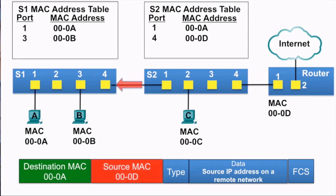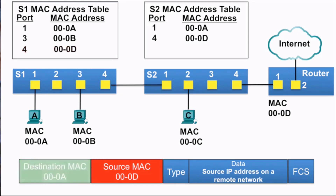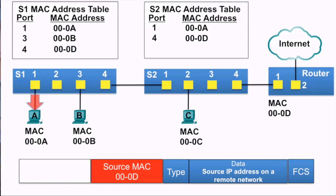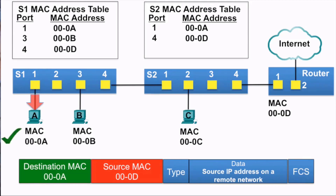S1 receives the Ethernet frame, examines the source MAC address, which is not in its MAC address table, so it adds it to its MAC address table. It examines the destination MAC address, which is in its MAC address table, so it forwards it out port 1 towards PCA. PCA examines the destination MAC address, and because it is a match, it accepts the rest of the frame.